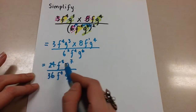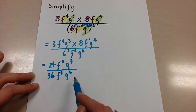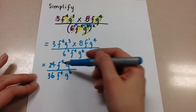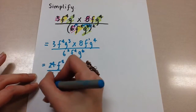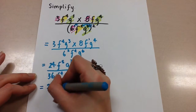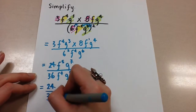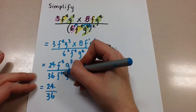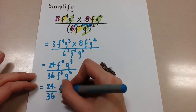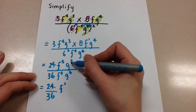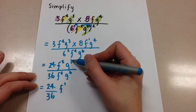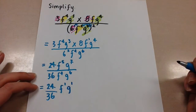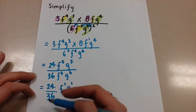We've simplified everything in the numerator and denominator that we can, so now we want to simplify the rest. There's a division here. F to the 5 divided by F to the 4 — we subtract the exponents: 5 minus 4 is 1, so we get F to the 1 in the numerator. Then G to the 7 divided by G to the 6 — 7 minus 6 is 1 again, so we get G to the power of 1 also in the numerator. Nothing is left in the denominator now except for that 36.